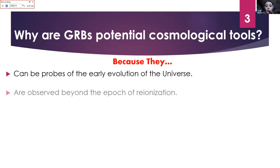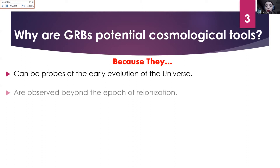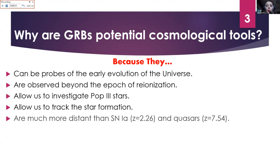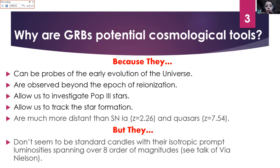An important question is: why are gamma ray bursts potential cosmological tools? They can be probes of the early evolution of the universe, are observed beyond the epoch of ionization, allow us to investigate population III stars, allow us to track star formation, and they are much more distant than supernovae 1a and quasars. However, there is a huge drawback: GRBs don't seem to be standard candles, with their isotropic prompt luminosities spanning over eight orders of magnitude. Please also pay attention to the talk by Bia Nilsson, who will tell more about GRB cosmology.